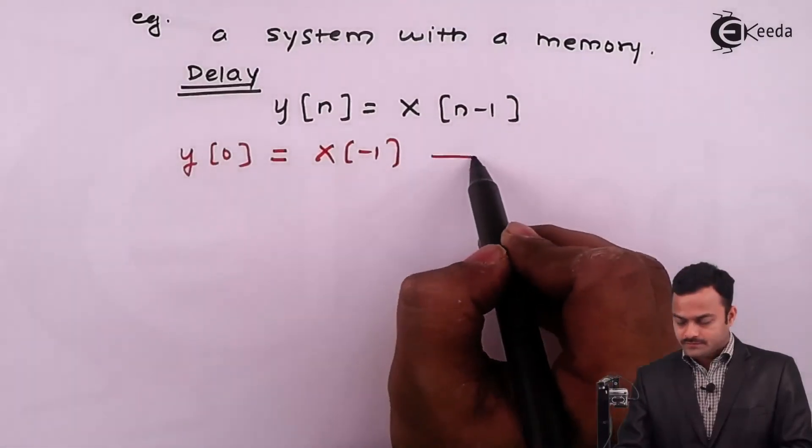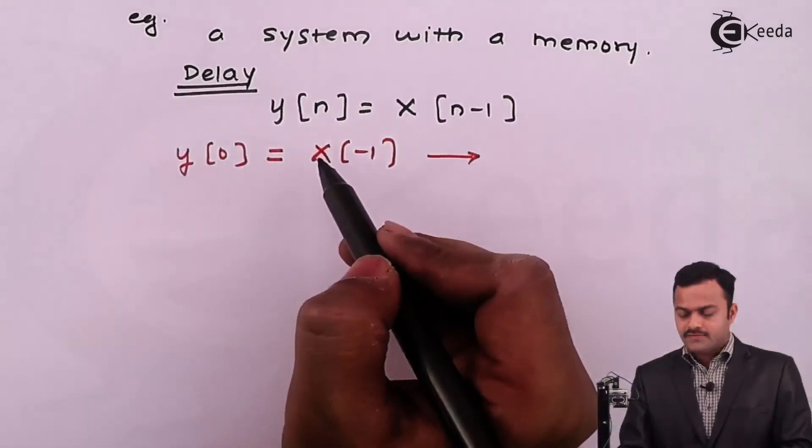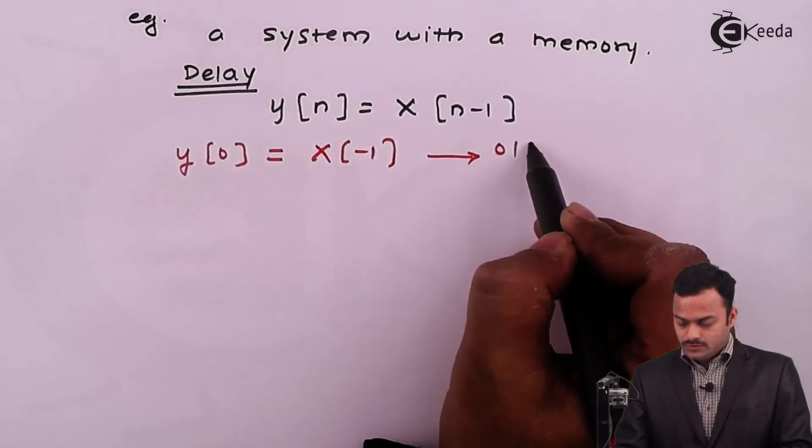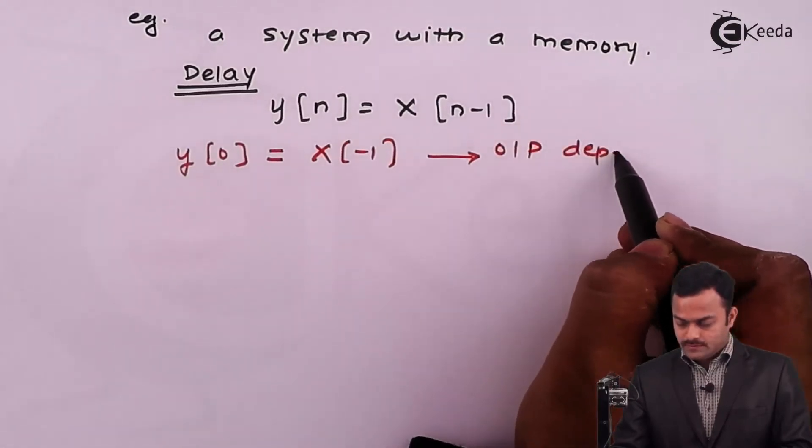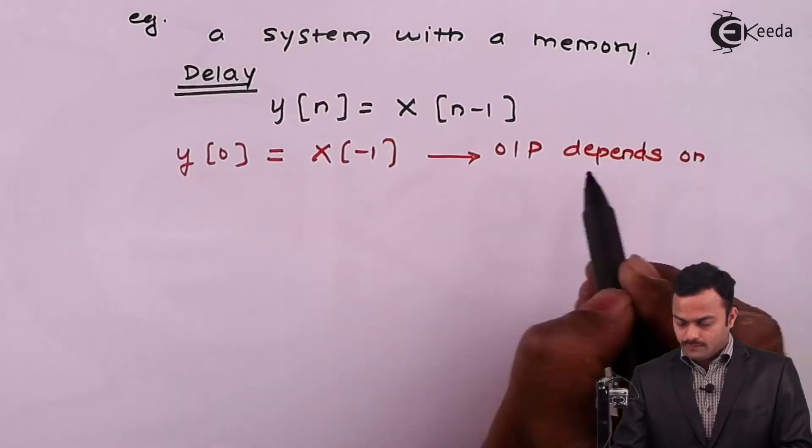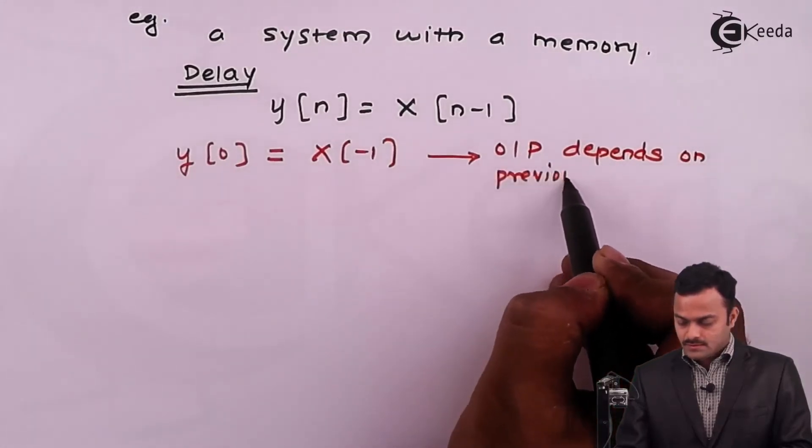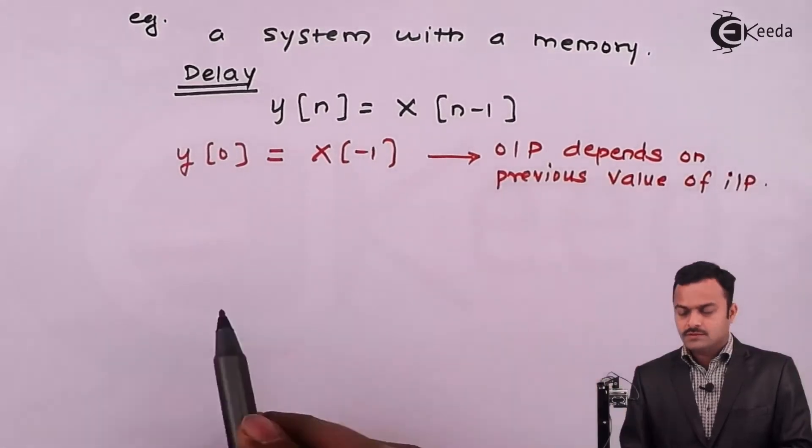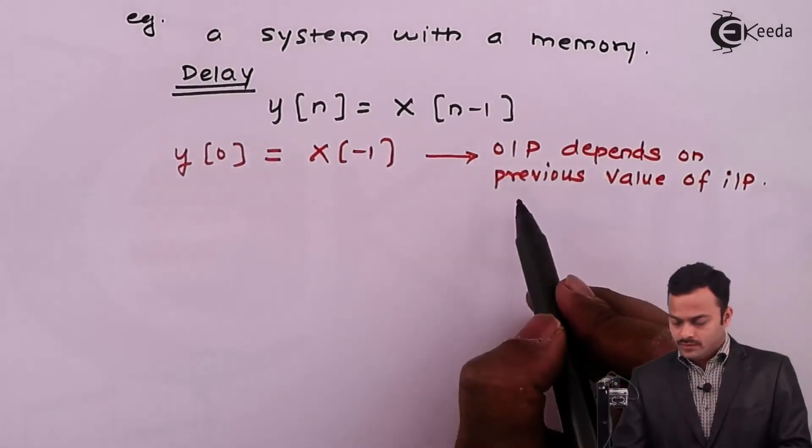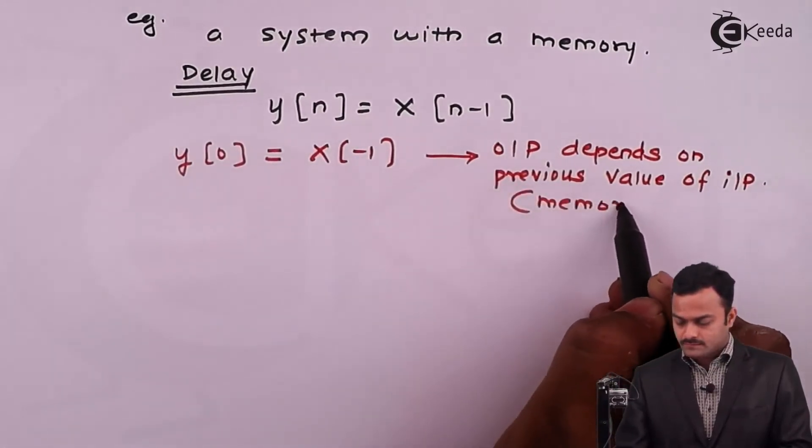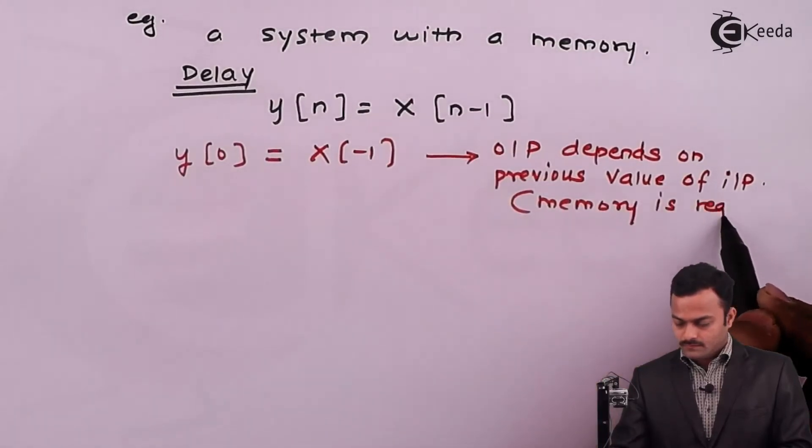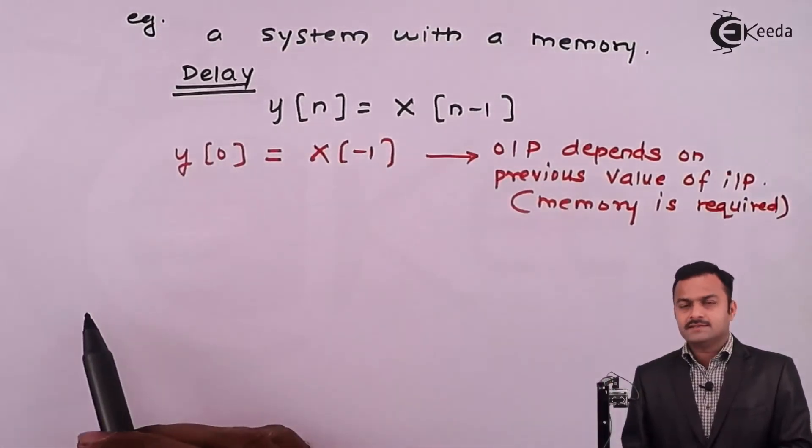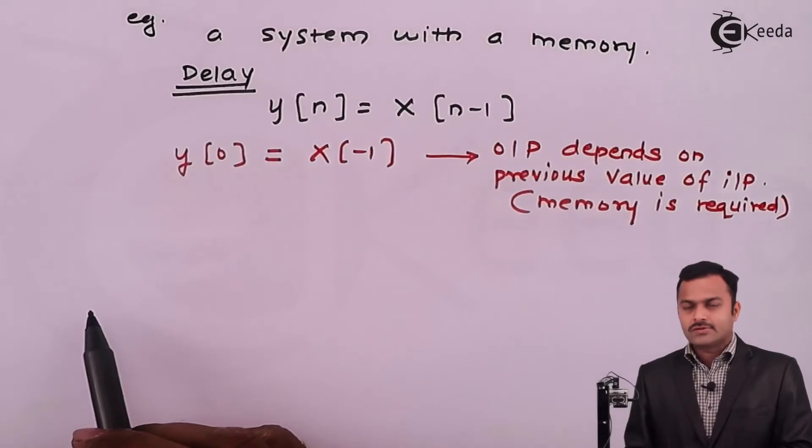What conclusion we can draw? To get y[0] I should know what is the input at n=-1. So output depends on previous value of input. In order to know the previous value of input, memory is required. So obviously this system is a system with a memory, also called as a dynamic system.